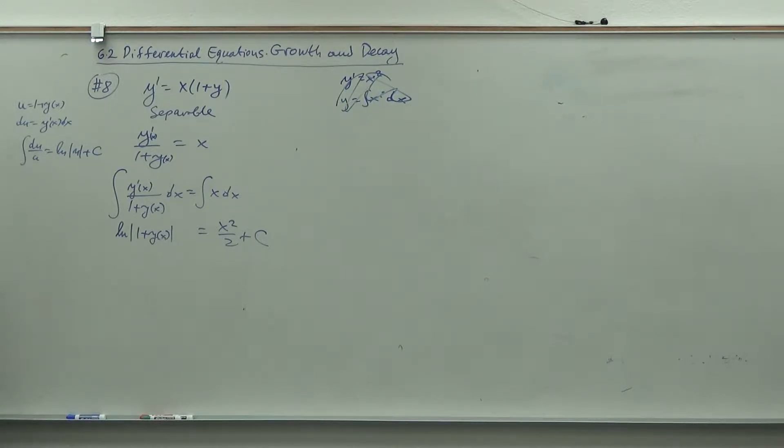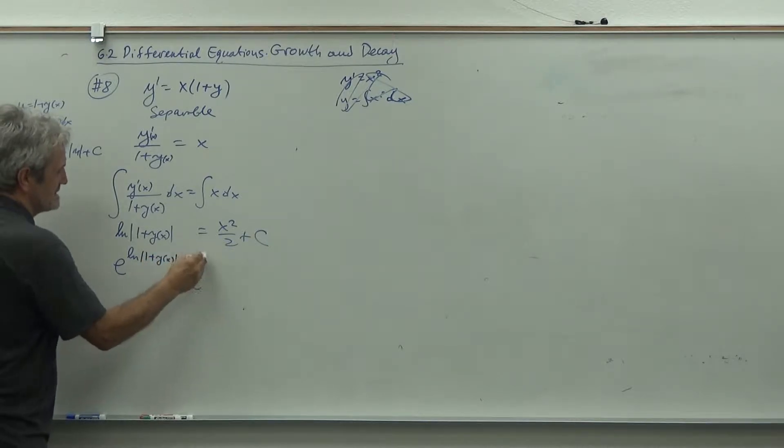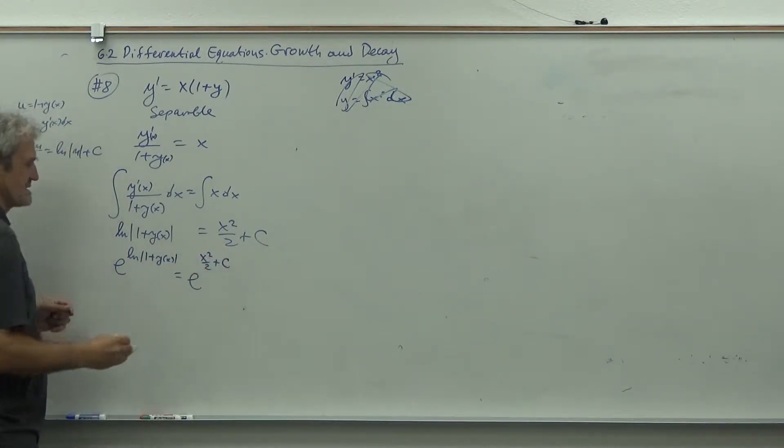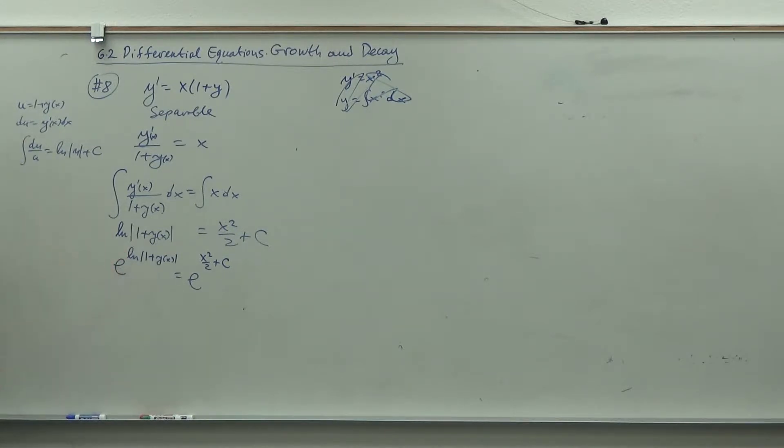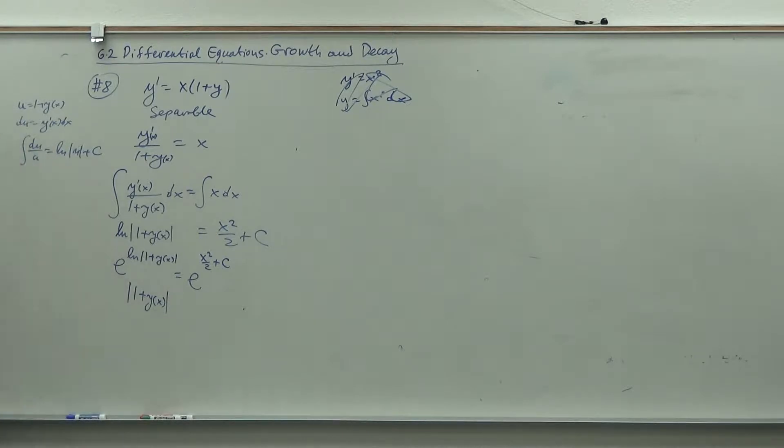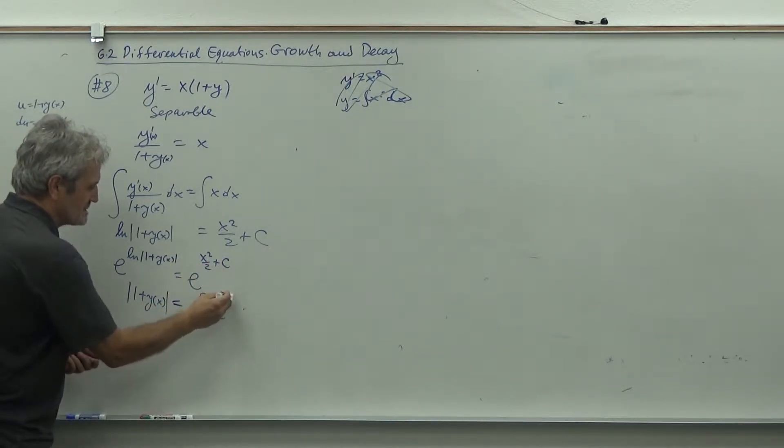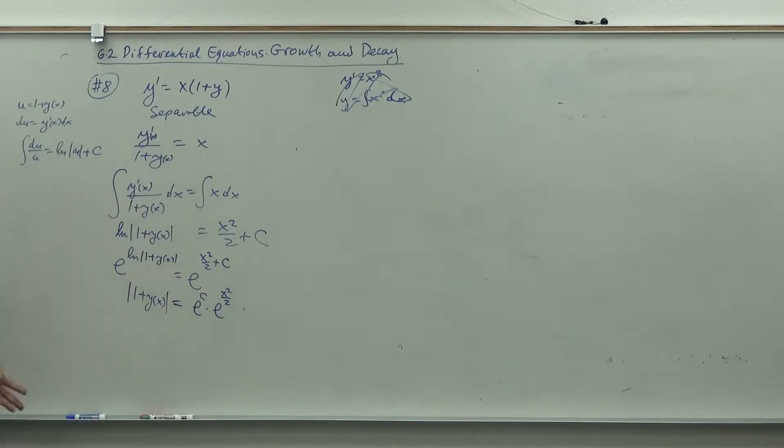After that this is integral of du over u which is ln of absolute value of u plus C. What we did, we actually solved the differential equation. Now comes the process of simplification. First, I'll raise e to both sides. So e to the ln of one plus y of x is e to the x squared over two plus C. E and ln are inverses of each other, so I just get what was under the ln.